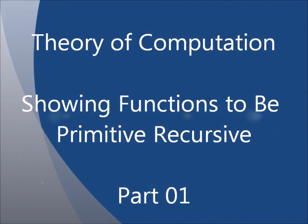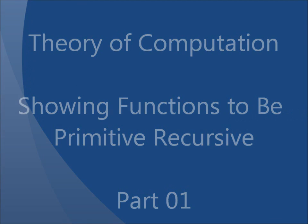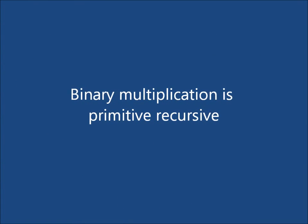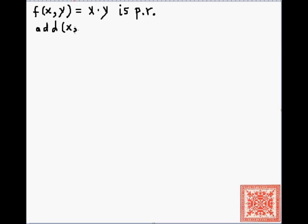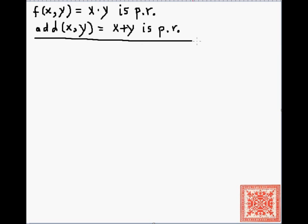In this screencast we'll discuss several functions and show them to be primitive recursive. We'll start with binary multiplication. Remember that all these functions are defined only on natural numbers in the context of this class. The function we want to show to be primitive recursive is x times y — binary multiplication. We'll call it 'mult', as it's a more mnemonic notation, and show that mult(x, y) is primitive recursive.